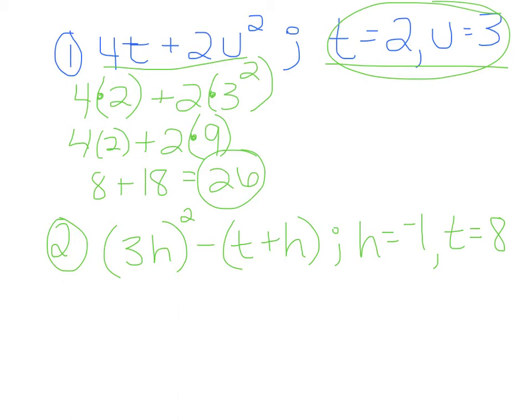Our next one. 3H squared minus T minus the quantity of T plus H where H equals negative 1 and T equals 8. So we're going to take 3 times negative 1. Remember when we have a number next to a letter, it means multiplication. So then we're going to take minus 8 plus negative 1. So all I did was plug these two numbers in for the letters that they represent.